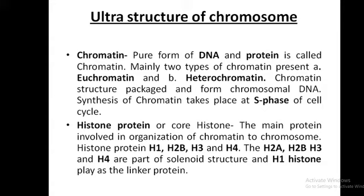Histone proteins, or core histones, are the main proteins involved in the organization of chromatin to chromosomes. Histone proteins are H1, H2A, H2B, H3, and H4. The H2A, H2B, H3, and H4 are part of the solenoid structure, and H1 histone plays as a linker protein.